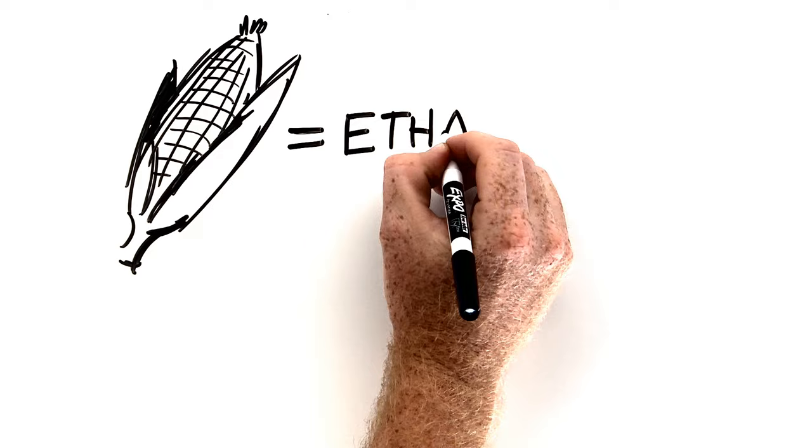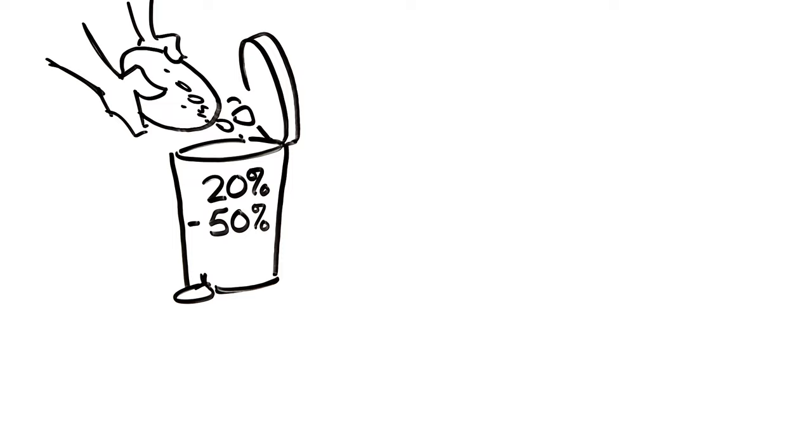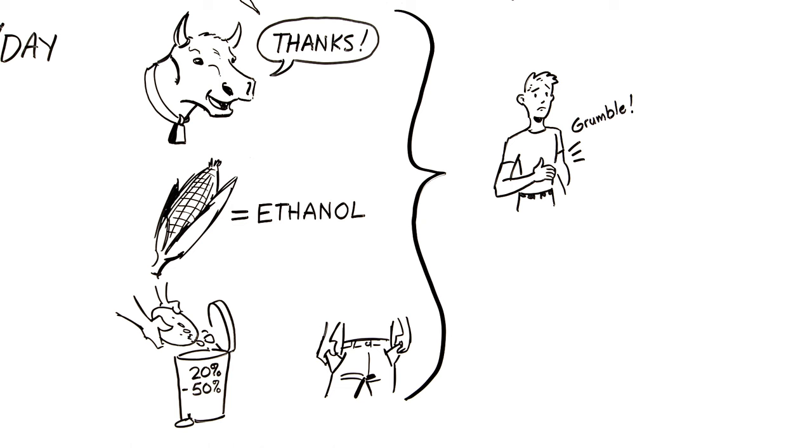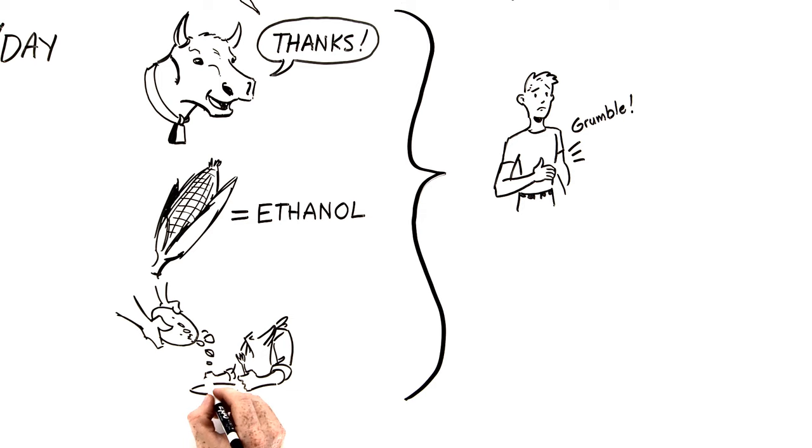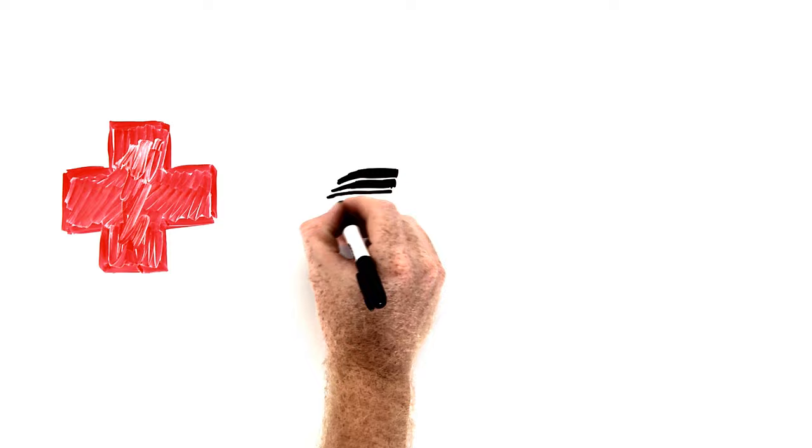But because we feed a lot of our food to animals, or turn corn into ethanol, or simply waste vast amounts, maybe 20 to 50% of the world's food is wasted, or because the people who need the food are too poor to afford it, hunger abounds. So we need to establish ways of making sure that less food is wasted and the food we do have is better distributed.